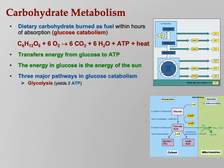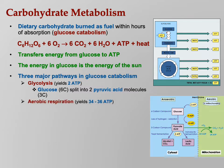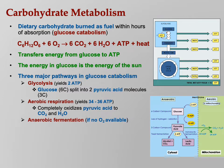Three major pathways in glucose catabolism. First, glycolysis — that yields two ATP right off the bat; glucose is split into two pyruvic acid molecules. Then aerobic respiration, where one molecule of glucose produces 34 to 36 ATPs in the presence of oxygen, completely oxidizing pyruvic acid to CO2 and H2O. Then anaerobic fermentation — in the absence of oxygen, you only produce two molecules of ATP per glucose molecule, and the pyruvic acid is reduced to lactic acid.